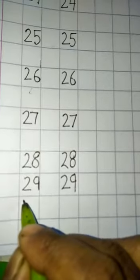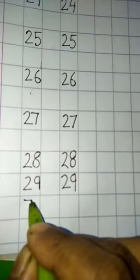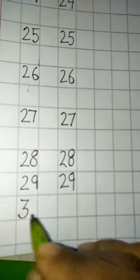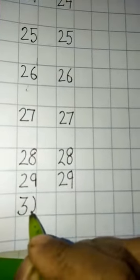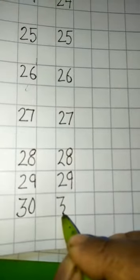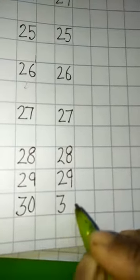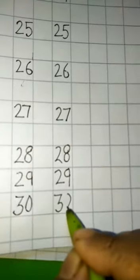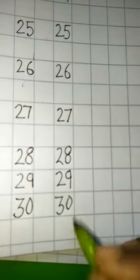For 30: one sleeping line, then slanting, then slanting, then curve, and 0 makes 30. Sleeping, slanting, then curve, then 0 makes 30.